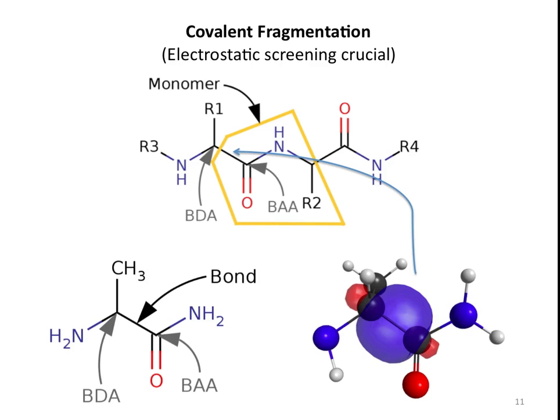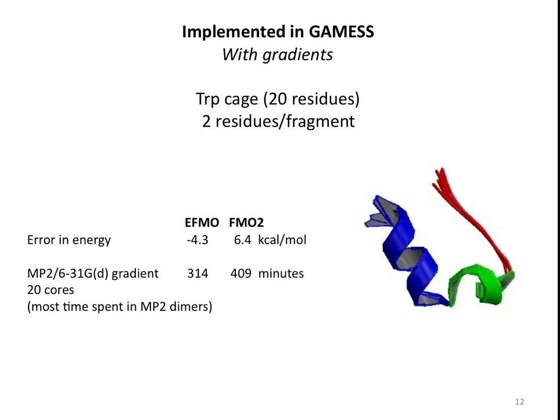This is implemented in GAMESS, as I said. It is implemented with gradients. A lot of these fragmentation methods don't have gradients in them yet, and obviously this is very important if you want to apply this to anything. Here's an example for a small protein tryptophan cage. We picked a small one so that we can do a full MP2 calculation on this so we can see what the errors are.